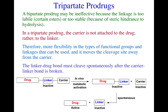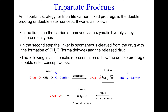In a tripartite prodrug, the linker bond must be cleaved spontaneously after the carrier-linker bond is broken - once it has reached its site of action. So you have the intact tripartite product, and then in the body, metabolic activation through esterase or amidase enzymes forms the drug plus the linker and the carrier, followed by spontaneous release of the active drug.